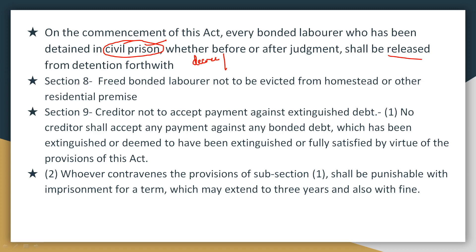Section 8 deals with the homestead. If a freed bonded laborer is living in a homestead — a farmhouse or residential premises provided by the creditor — they cannot be evicted from that place. This is important: Section 8 says the freed bonded laborer cannot be evicted.